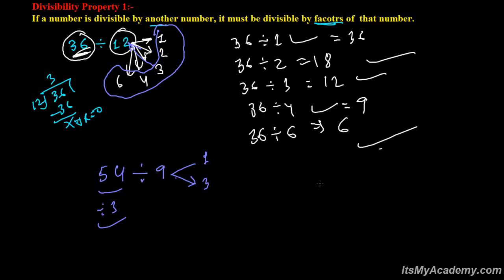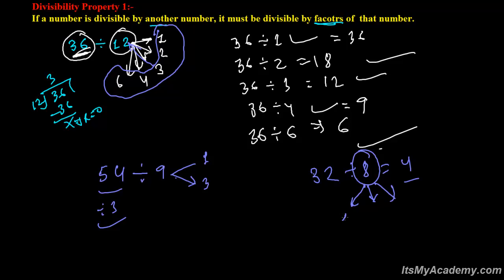Another example: take 32. 32 is divisible by 8 — 8 times 4 is 32. So if 32 is divisible by 8, it must also be divisible by the factors of 8, which are 1, 2, and 4. So 32 can be divided by 2 and by 4.